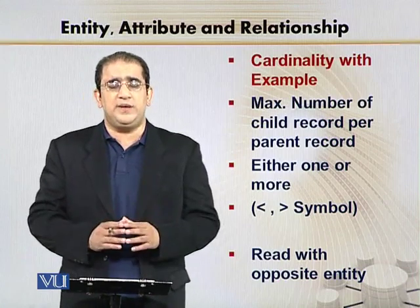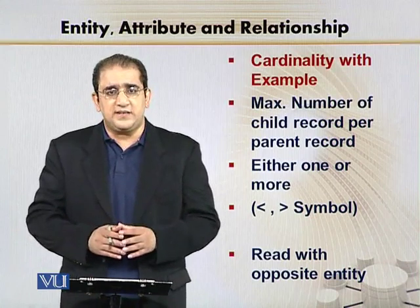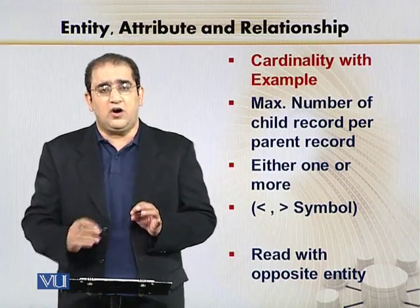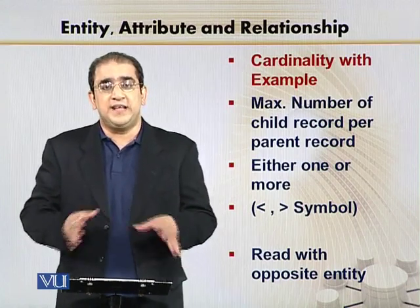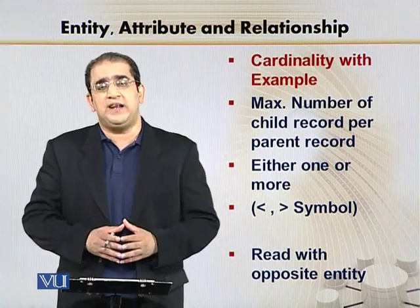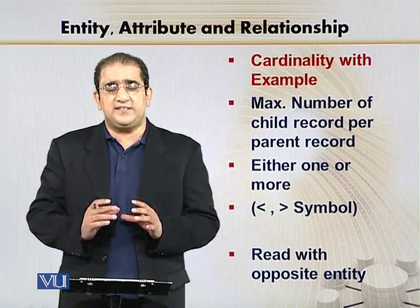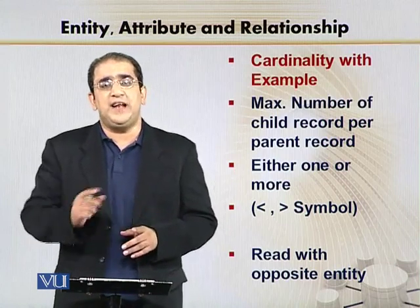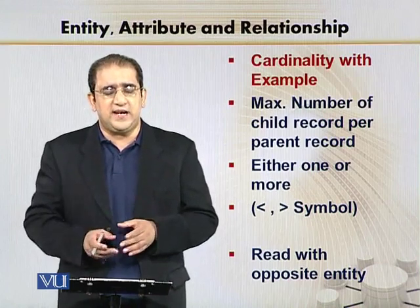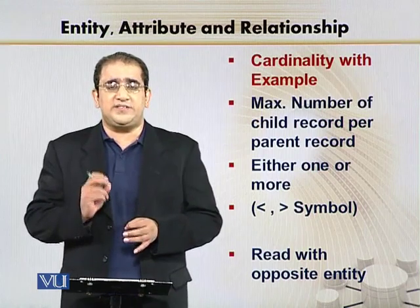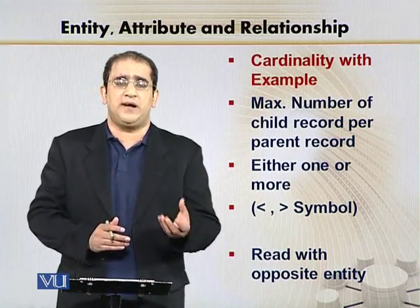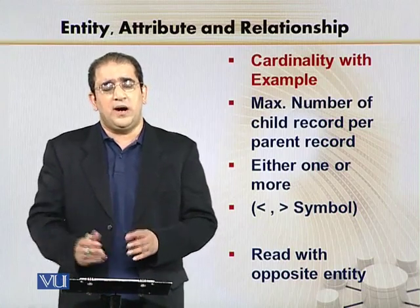We can only say minimum number of records — jo optionality batati hai — and maximum number of records ya more than one. To optionality ko basically hum less than or greater than ke symbol se represent karte hain. Agar optionality ya cardinality nahi likhi ho, it is understood that the cardinality is one. Zero aur one optionality mein cover ho gaya, one aur more hamne cardinality mein cover kar liya.